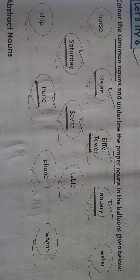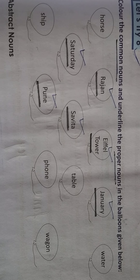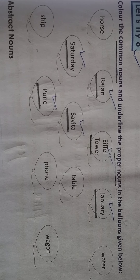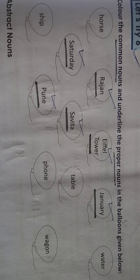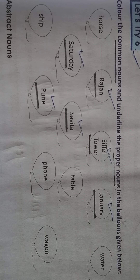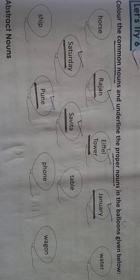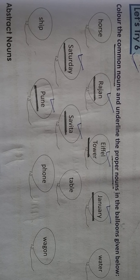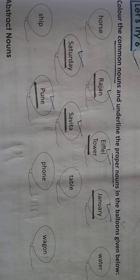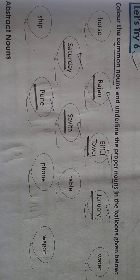January — J begins with a capital letter, so that's why it's a proper noun. Water — it's a common noun. Saturday — yes, it's a proper noun. Sabita is the name of a specific person, so it is also a proper noun.